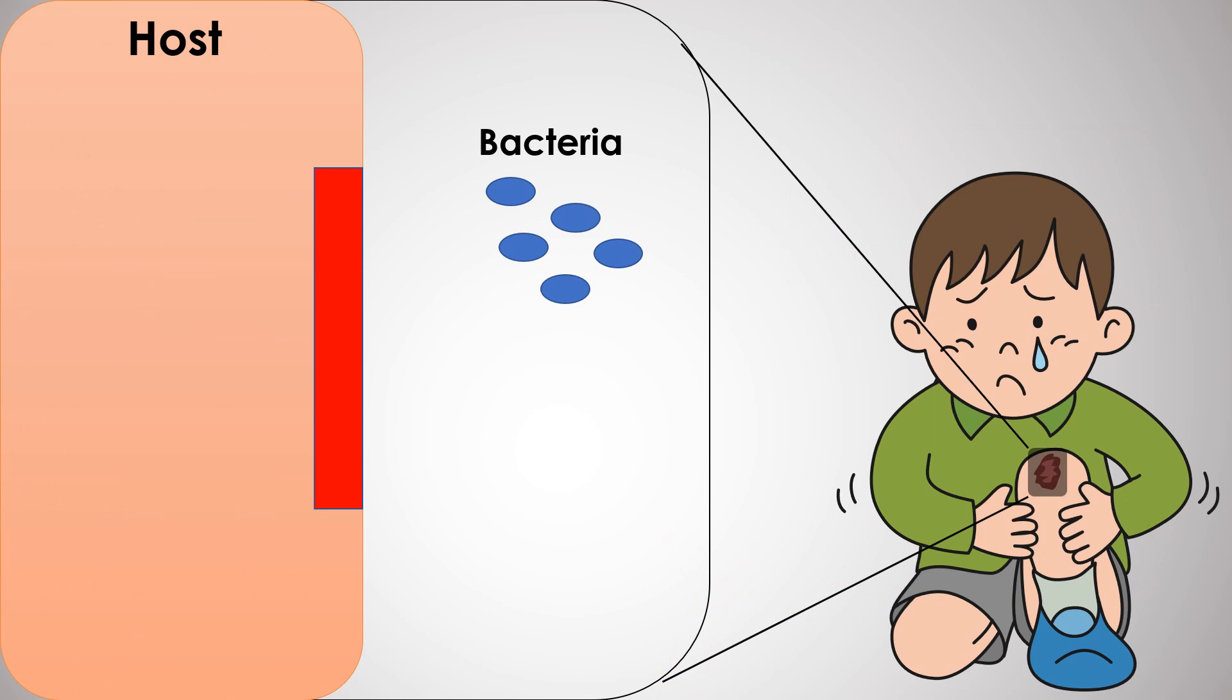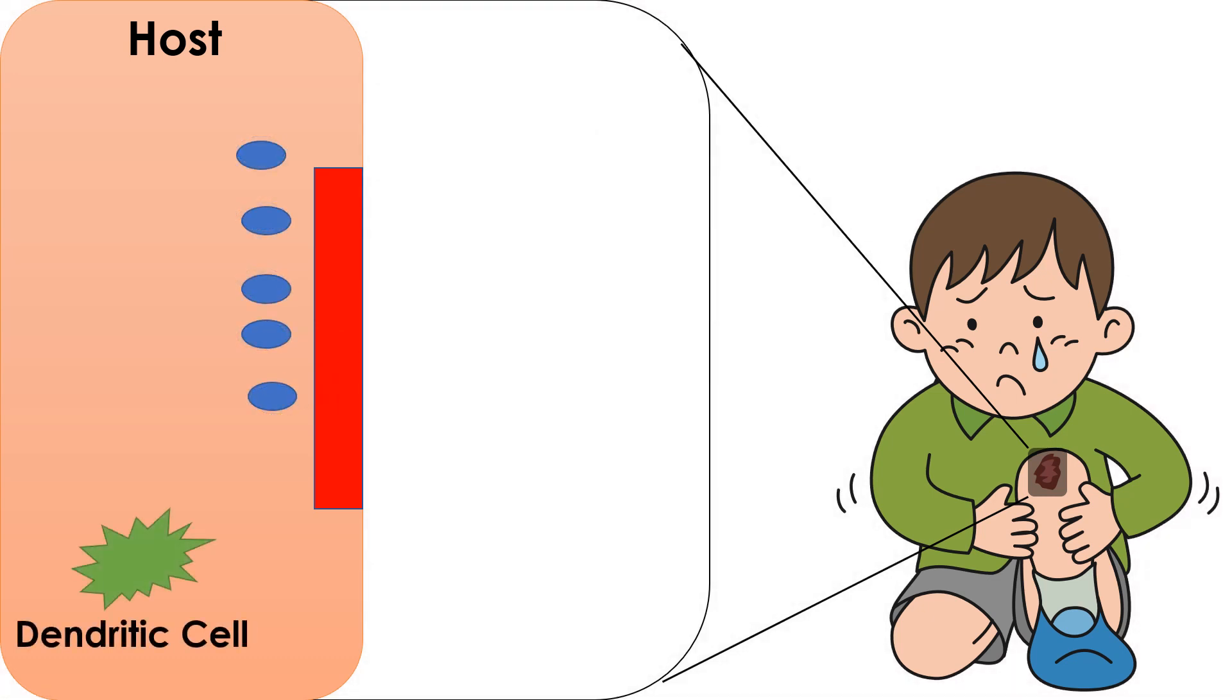Take another look at our friend with the scraped knee, but this time examining the adaptive immune system. Lymphocytes called dendritic cells will engulf antigens through phagocytosis. They will process the antigens in proteins called major histocompatibility proteins, and the antigens are then delivered to T cells, and the T cells are activated. The T cells are matured in the thymus and cloned with receptors specific to the antigens brought by the dendritic cells.